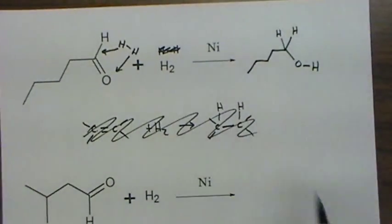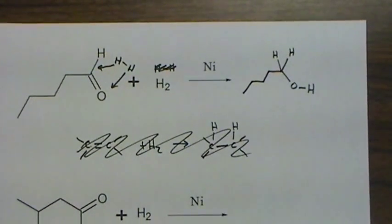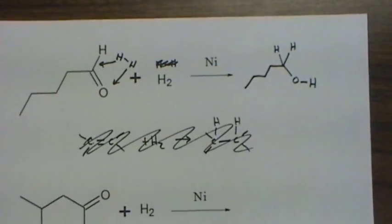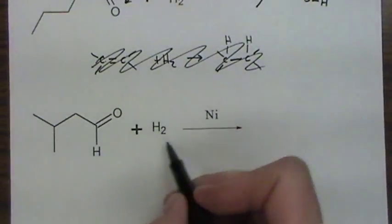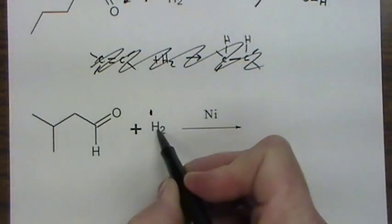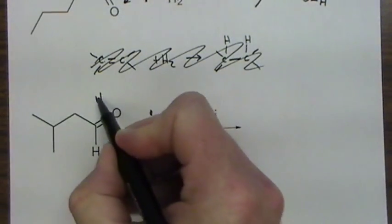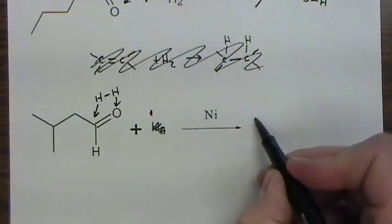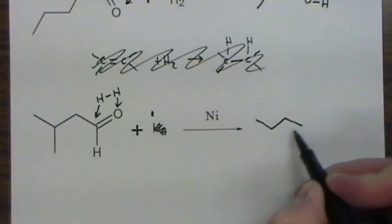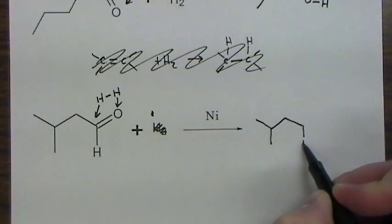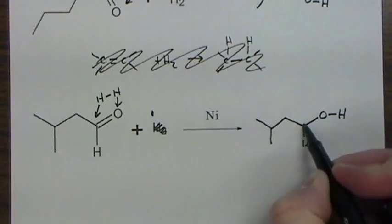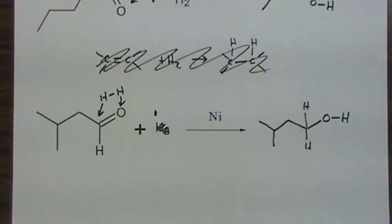The nickel needs to be there as a catalyst and we create an alcohol. Doing it here again, picture this hydrogen comes over, it attaches here and here, opens up that double bond. And that happens every time. So one hydrogen goes to the oxygen, one goes to the carbon that was the other side of that double bond.